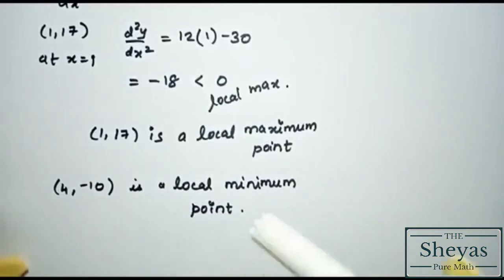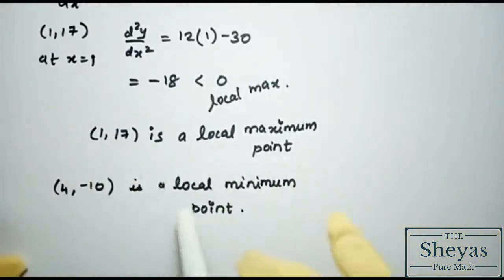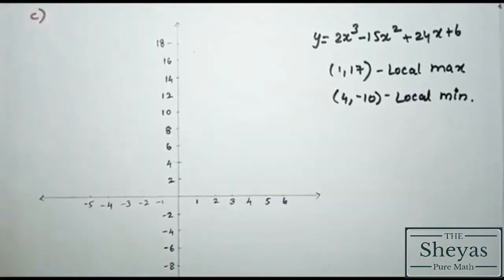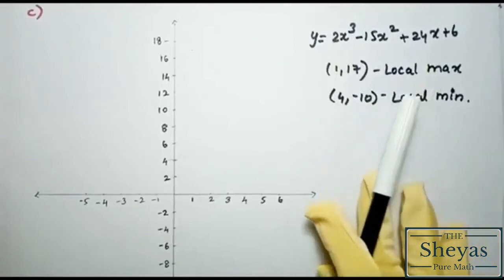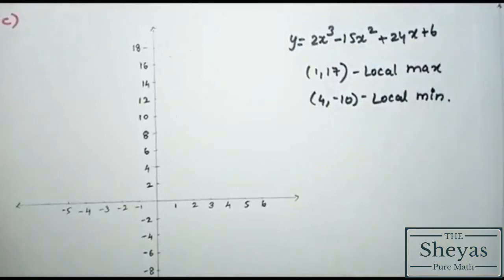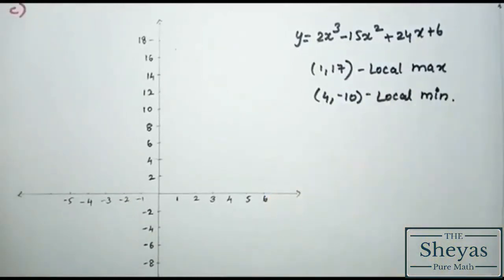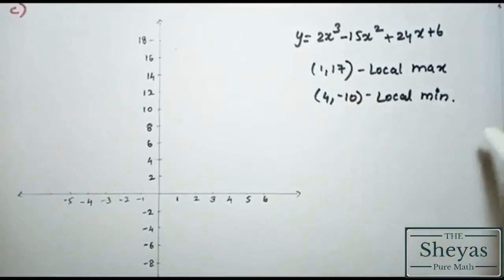So in part b we have determined the nature of the stationary points. (4, −10) is a local minimum point and (1, 17) is a local maximum point.